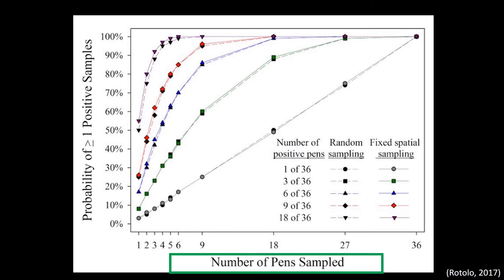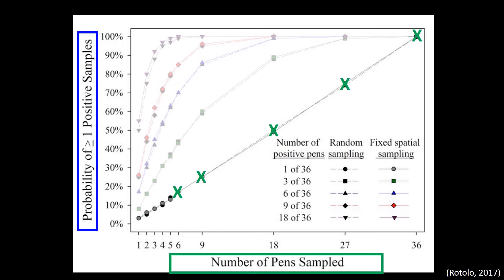As the number of samples collected increases, the probability of detecting infection increases. For example, in a barn where only one pen is infected, as the number of samples collected increases from six to nine to eighteen and so on, their probability or likelihood of detecting infection also increases.